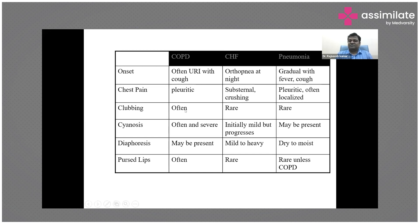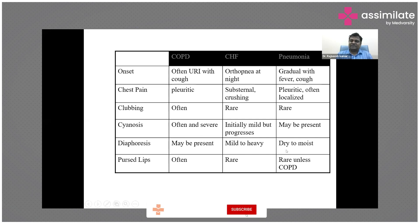Clubbing may be seen in COPD but is rare in all three conditions. Cyanosis may be present in COPD; in CHF it is initially mild but may progress. In pneumonia it is uncommon, and if cyanosis is present it indicates very severe pneumonia. Diaphoresis may be present but in CHF it may be heavy; in pneumonia it is uncommon.